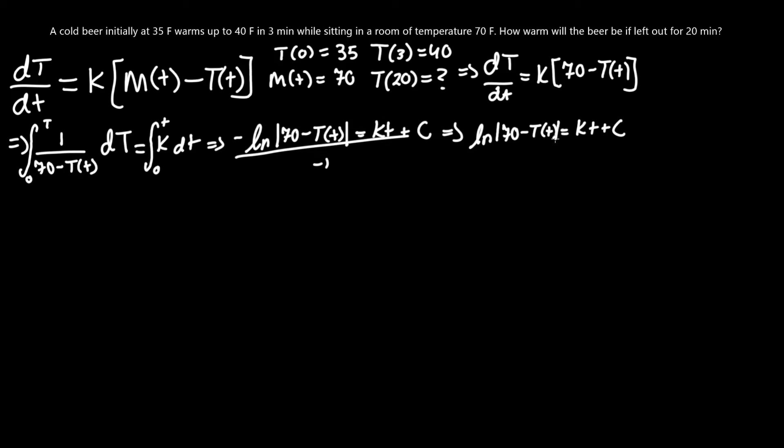Now let's get rid of the ln aspect of this formula. We raise e to the left hand side, e to the right hand side, and that gives us 70 minus T(t) equals e to the kt plus c.